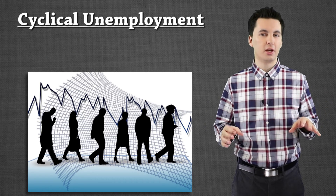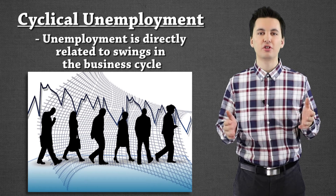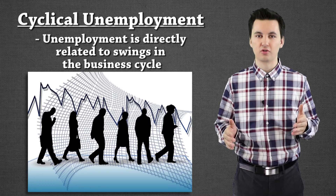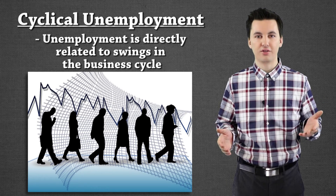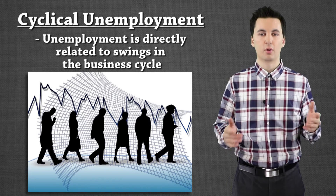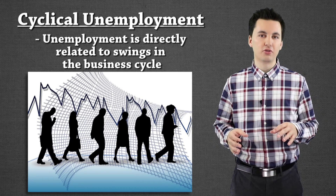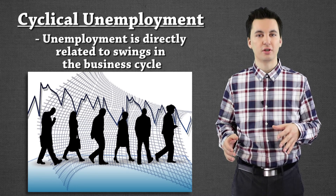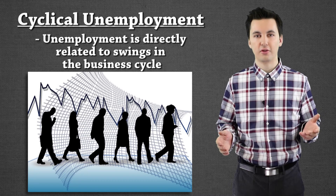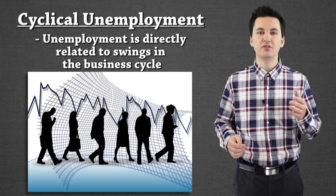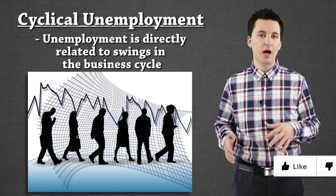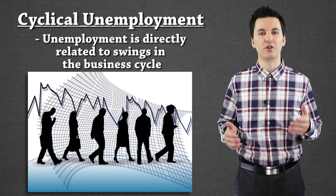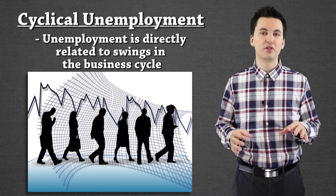Up next, we have cyclical unemployment, which connects directly to the business cycle. Make sure to check out my video on the business cycle for more detail. Essentially, the business cycle goes through a series of expansions and contractions — growth followed by a possible recession or decline. During downturns, people change their purchasing habits. When we're experiencing a downtrend in economic growth or a recession, people start to save money and stop purchasing normal or expensive goods, so companies will lay off employees until the market turns around.